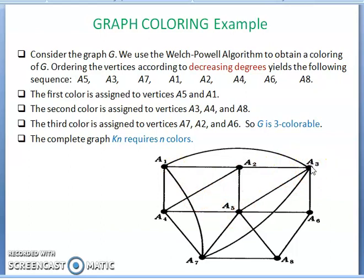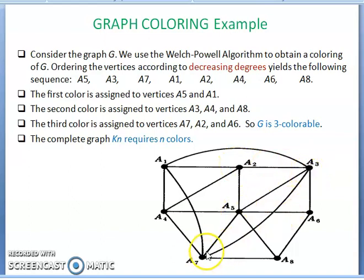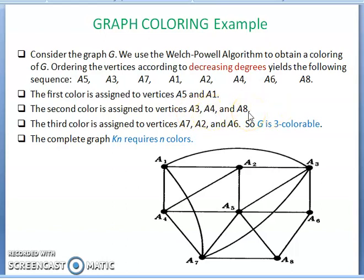For the second color (green), take the next vertex A3 (degree 5). The adjacent vertices of A3 are A1, A2, A5, A6, A7 — don't assign green to these. The non-adjacent uncolored vertices are A4 and A8. So green is assigned to A3, A4, and A8.